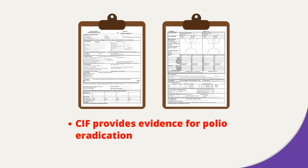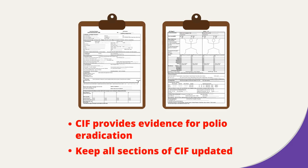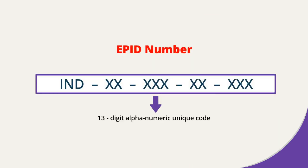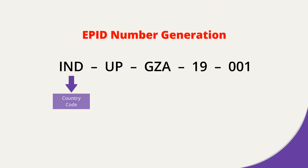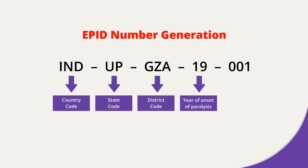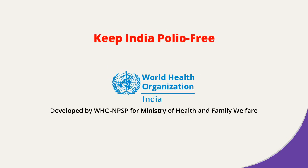The CIF is an important document for providing evidence of polio eradication. Keep all sections updated as and when relevant information becomes available. The EPID number is assigned by the DIO or SMO office. It is a 13-digit alphanumeric unique code for each suspected case, consisting of country code, state code, district code, year of onset of paralysis, and case serial number. Sensitive AFP surveillance is important for a polio-free India.